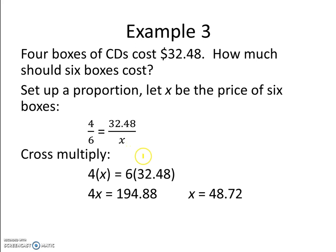When we cross multiply, we get 4 times x and 6 times 32.48. When we distribute that 6 to our 32.48, we find 4x equals 194.88.